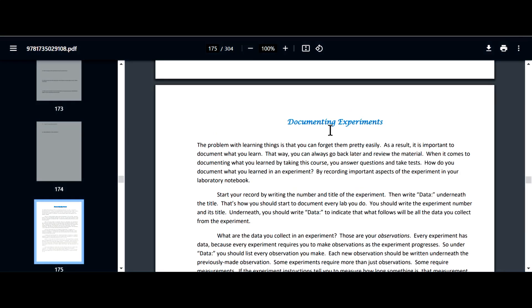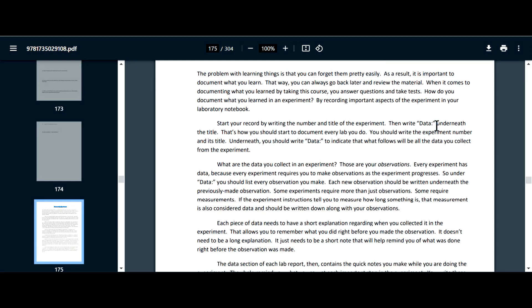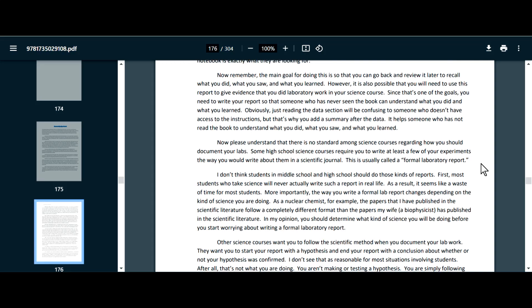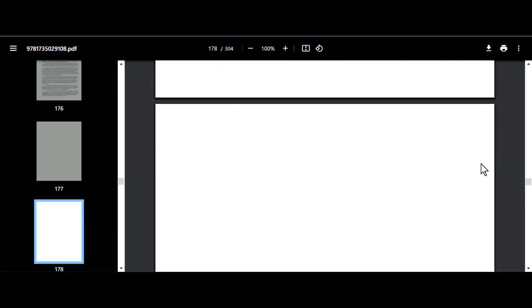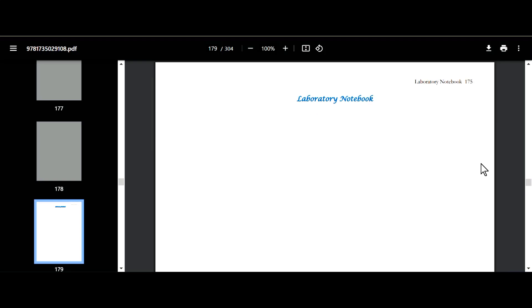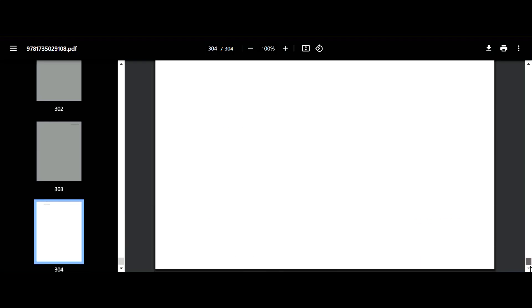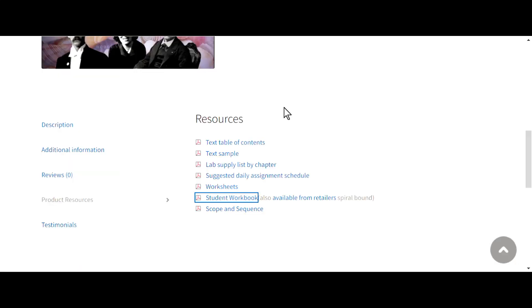Okay, so then here we have documenting experiments. So it talks about how to document your experiment. And then I think that we just have the laboratory notebook, which you would be using the information above to document the experiments. And so these are just a bunch of pretty much blank pages here for your child to put their experiments in. So that is something that you can find here at bereanbuilders.com. So you could just print that off if you wanted the PDF version.